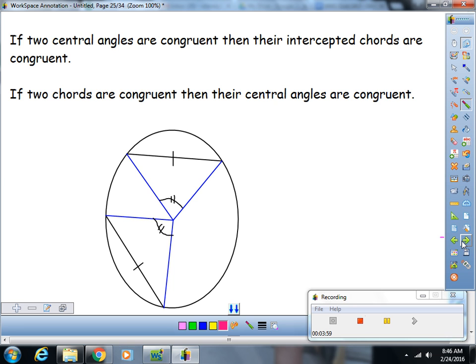Here's your next two theorems. Again, it's just one theorem and its converse. If two central angles are congruent, then their intercepted chords are congruent. Or if two chords are congruent, then their intercepted arcs are congruent.